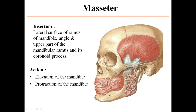The masseter is inserted into the lateral surface of the ramus of the mandible and its angle, including the upper part of the mandibular ramus and coronoid process. In summary, it inserts into the lateral surface of the ramus of the mandible. As for action, masseter is a strong muscle that helps in elevation and protraction of the mandible, while temporalis posterior fibers help in retraction.